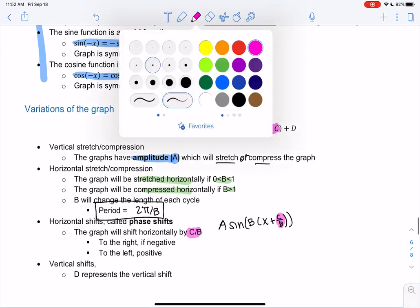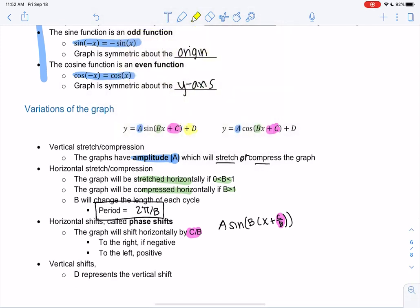And then d, I think, is probably the most straightforward one. It's just outside. It just shifts the graph up.